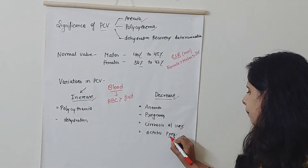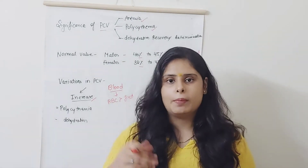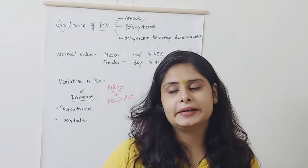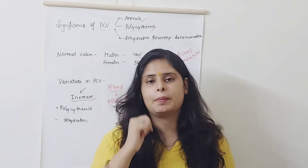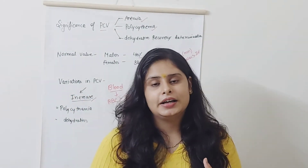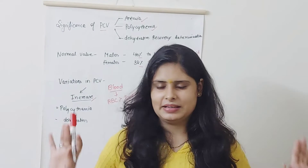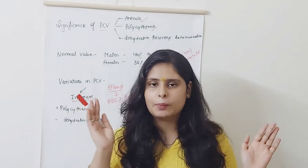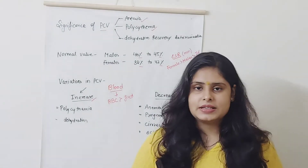Next is ectopic pregnancy. In normal pregnancy, implantation occurs in the fundus of the uterus. But in ectopic pregnancy, implantation occurs outside the uterus — either in the fallopian tube, the ovaries, or elsewhere. Most commonly, ectopic pregnancy occurs in the fallopian tube.